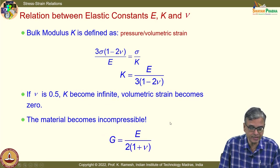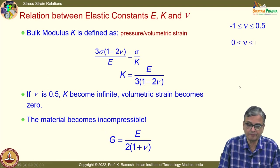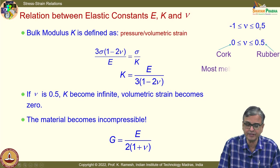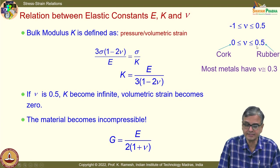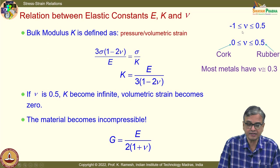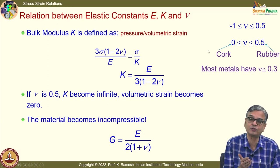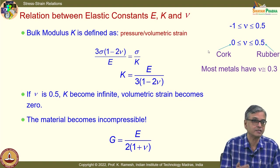The bounding values for Poisson's ratio are from −1 to 0.5. Cork is a very interesting material with Poisson's ratio of 0, whereas rubber has a Poisson's ratio of 0.5. We have also seen that negative Poisson's ratio comes to advantage when you want to develop a stent for arteries and other blood vessels.